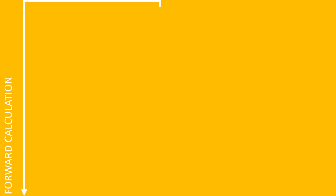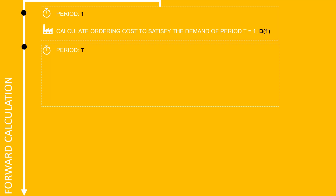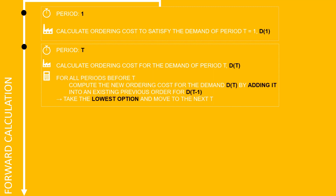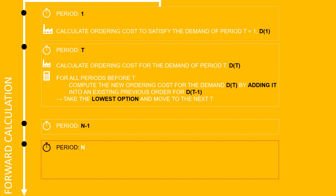The first step is called the forward calculation. It starts at period 1, the first month. You calculate the ordering cost to satisfy the demand of t=1 — basically, you only produce the first month for the quantity of the first month. Then you move t from 2 to n. You start by calculating the ordering cost for the demand of period t, then you look backward. For all the periods before t, you compute the new ordering cost for demand t by adding it into an existing previous order of d(t-1). You try to combine the demand of this month with the month before to increase the quantity produced in the last setup and reduce the number of setups, while looking at how much inventory cost you are adding. Then you take the lowest option and move to the next t, until t equals n.